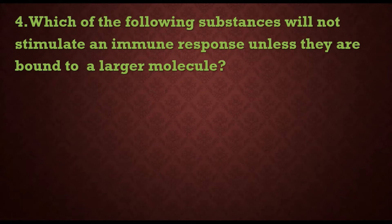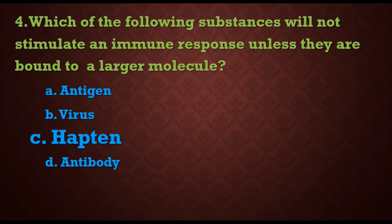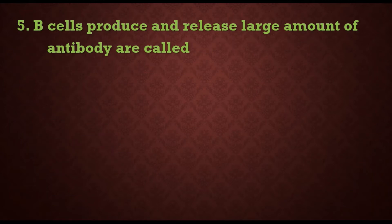Fourth question: which of the following substances will not stimulate an immune response unless they are bound to a large molecule? Options are: a) antigen, b) virus, c) hapten, d) antibody. The answer is c) hapten, which is an incomplete antigen — it will only act as an antigen when bound to a large molecule.